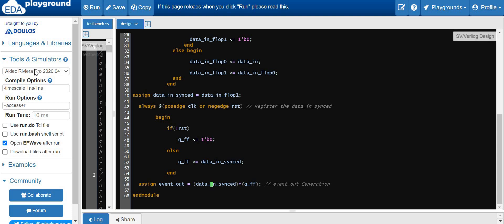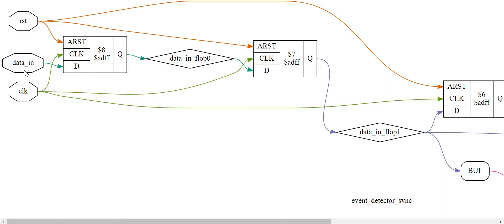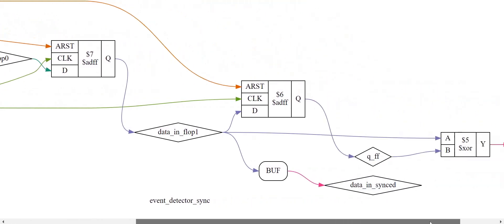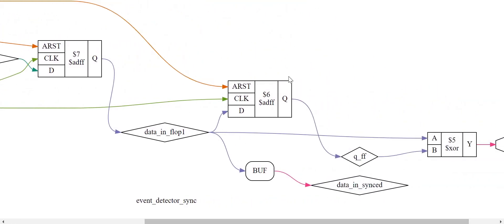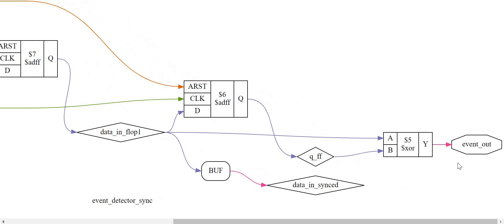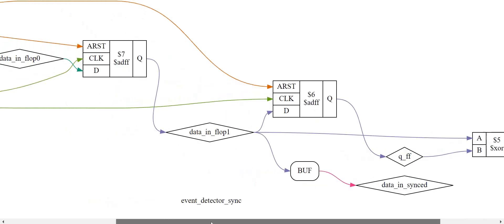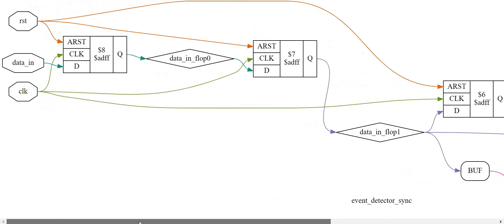Now let's synthesize this design. Data in passes first through the first flip-flop, then to the second flip-flop — this is our synchronized data in value. The synchronized data in value is then registered using a D flip-flop register, and the output of this register and the synchronized data in value go to the XOR gate to produce the event out signal. This is pretty similar to what we have seen in the circuit design with the synchronized data in input.